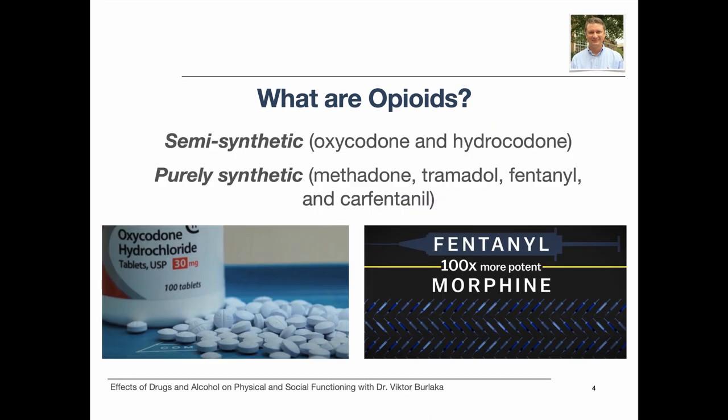Oxycodone and hydrocodone are semi-synthetic opioid drugs. Purely synthetic opioid examples include methadone, tramadol, fentanyl, and carfentanil. Opioids are manufactured both by licensed pharmaceutical companies in the U.S. and other countries, as well as illegally produced and distributed by uncontrolled clandestine laboratories around the world.